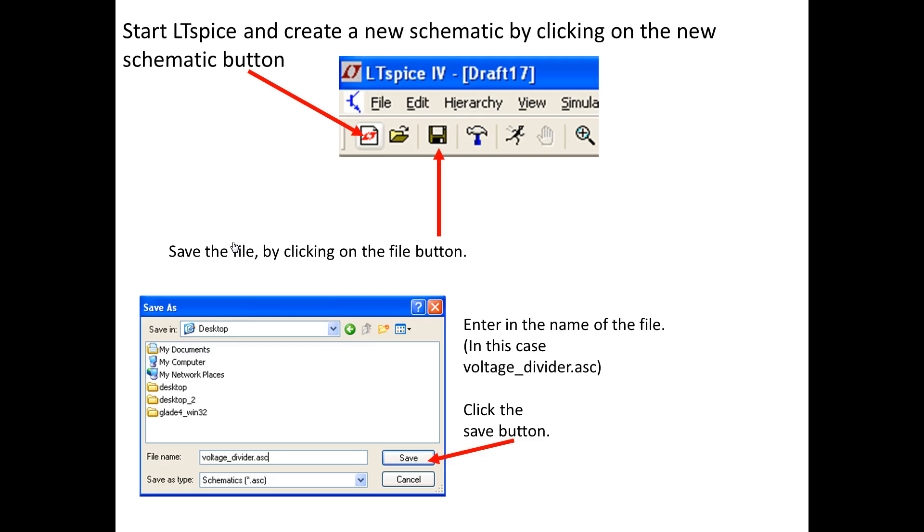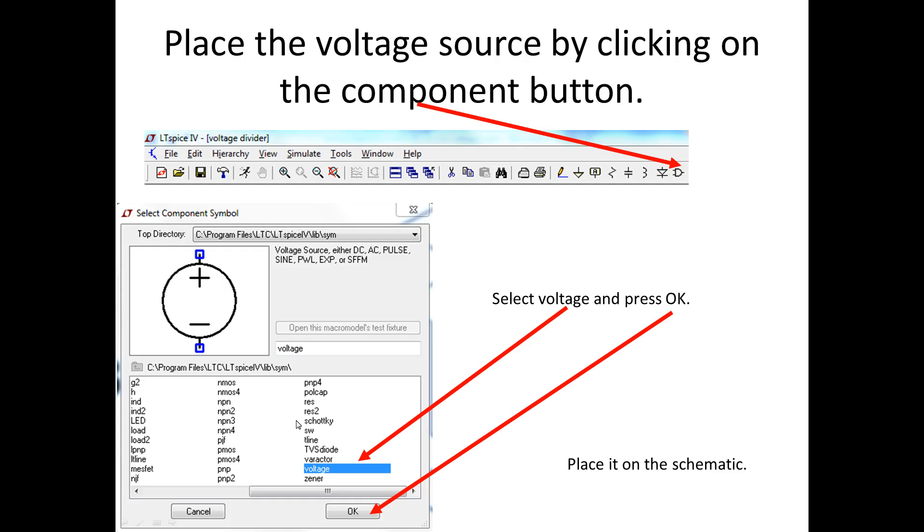So once we've downloaded the software and we run it, we want to start a schematic. The way we do that is click on the schematic icon in the toolbar. Then we'll want to save it right away, just in case anything happens, so we can come back and we won't lose our work. This example is voltage divider. And of course this is my desktop, and some of these icons will be different.